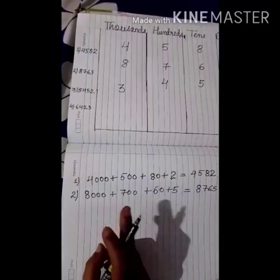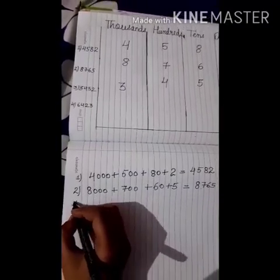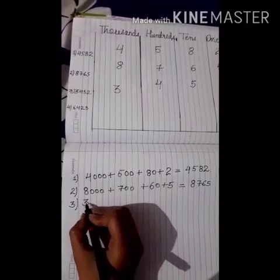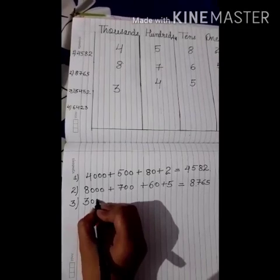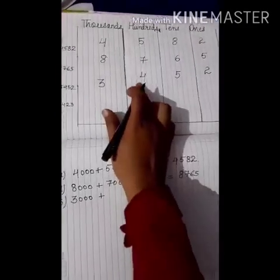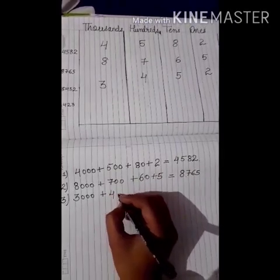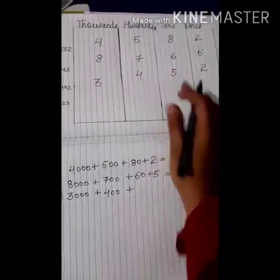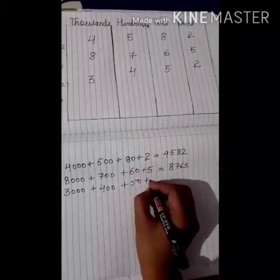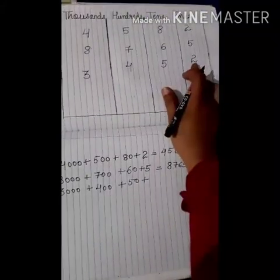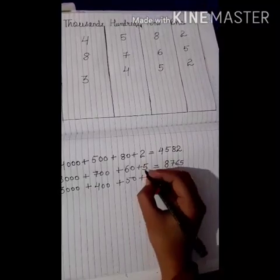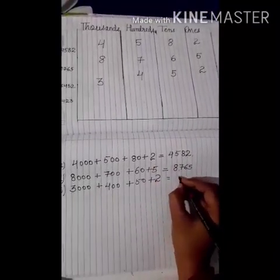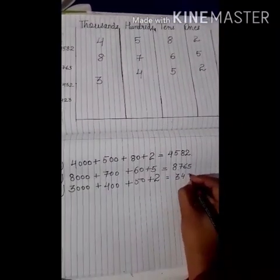Now we will write the expanded form. 3 is on the 1000's place, so in 1000's how many zeros? 3 zeros — 1, 2, 3. Plus 4 is on the 100's place, so in 100's how many zeros? 2 zeros — 1, 2. In 10's, how many zeros? 1 zero. So 5. And in 1's, how many zeros? No zeros, so we write 2 as it is. So we have 3452.